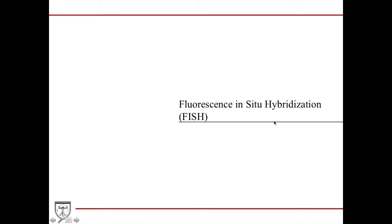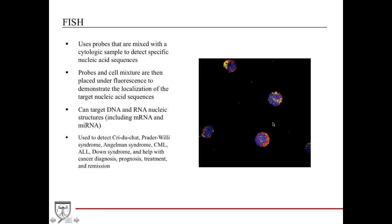The last one we're going to talk about is fluorescence in situ hybridization, which is probably one of my favorites, also called FISH. FISH is a very interesting technique used in biochemistry that produces very colorful or lusher images because it takes a specific piece of instrument to then capture the fluorescent glow that you use in these biological samples. You have these probes that are mixed into a cytologic sample that detect this nucleic acid sequence. These probes and this cell mixture are then placed under this fluorescence camera, and you can actually demonstrate the actual physical localization of these nucleic acid sequences.